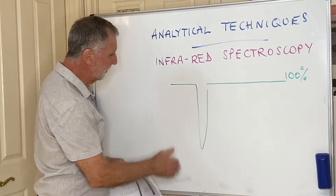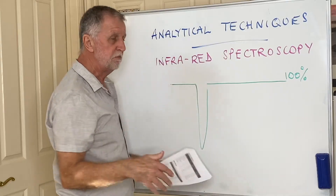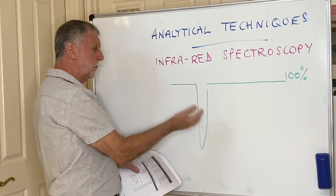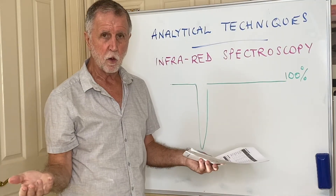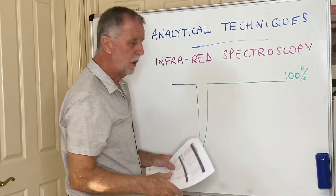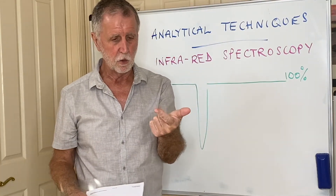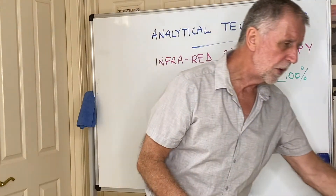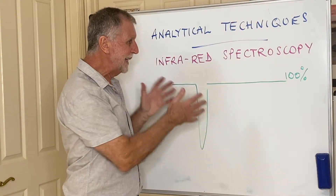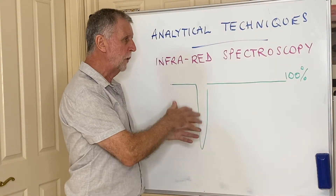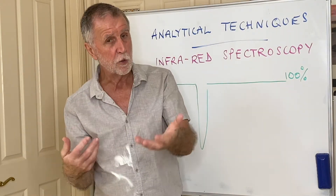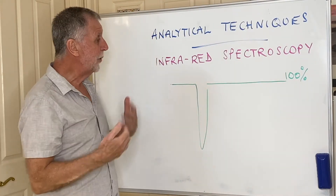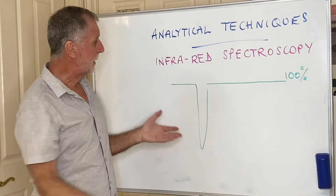Certain features stand out clearly: a big broad peak around 3000 indicates a carboxylic acid; a broad but slightly narrower peak around 3500 indicates the O–H of an alcohol; a peak around 1700 indicates a C=O double bond, which could be an aldehyde, ketone, carboxylic acid, or ester. On their own these may not identify the compound uniquely, but combined with mass spectrometry and other information, infrared spectroscopy can be very useful.